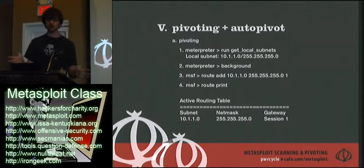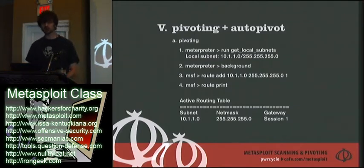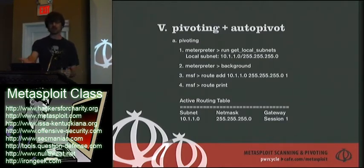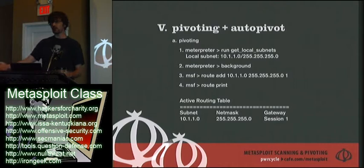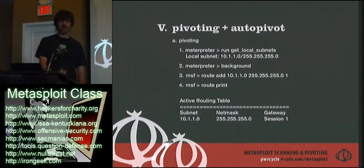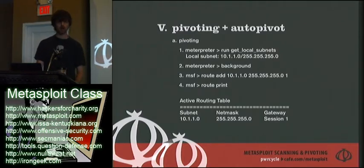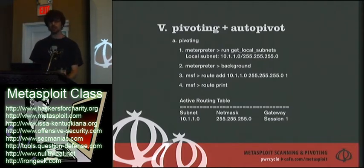Once you get a Meterpreter command line — no matter how you get it, whether through social engineering or a direct exploit — if you run the script 'get_local_subnets', it'll tell you what it can see. Usually it's going to be some private IP address in a corporate environment. If you then background that session, go to your MSF console, and add a route for the new subnet you just saw on the box you popped, then any scans you do on that internal subnet will be routed through the box you've already compromised.